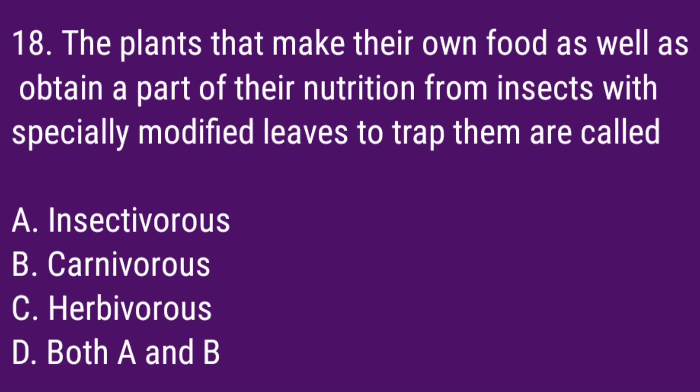Q18. The plants that make their own food as well as obtain a part of their nutrition from insects, with specially modified leaves to trap them, are called? Correct answer: Insectivorous and carnivorous.